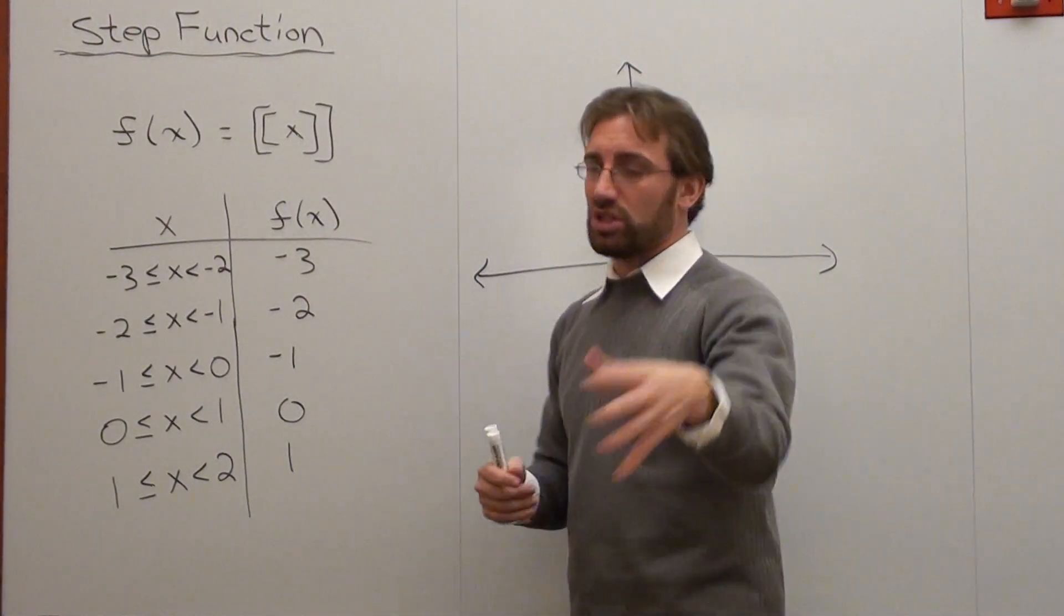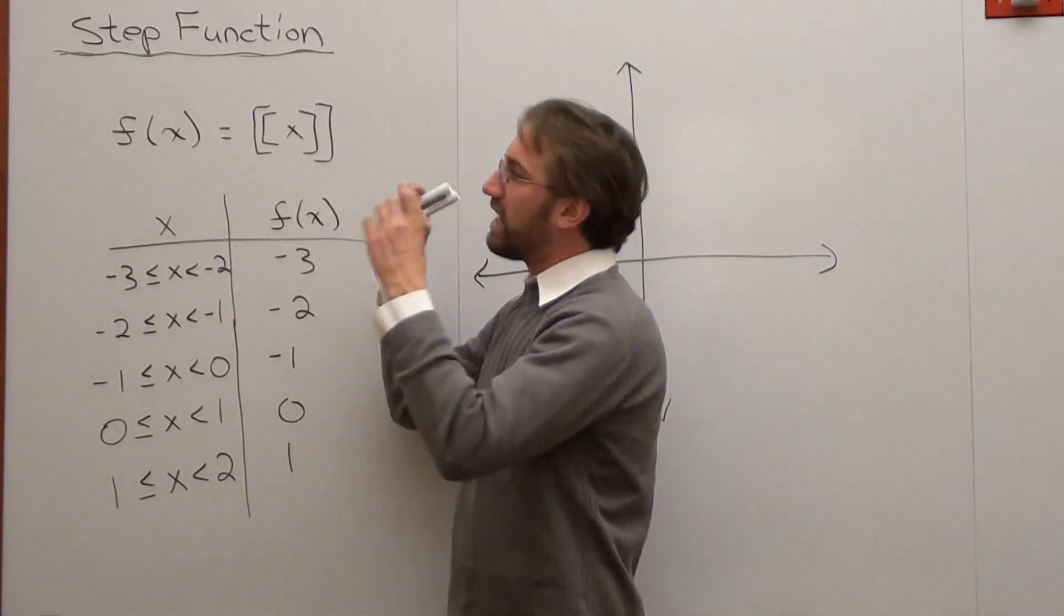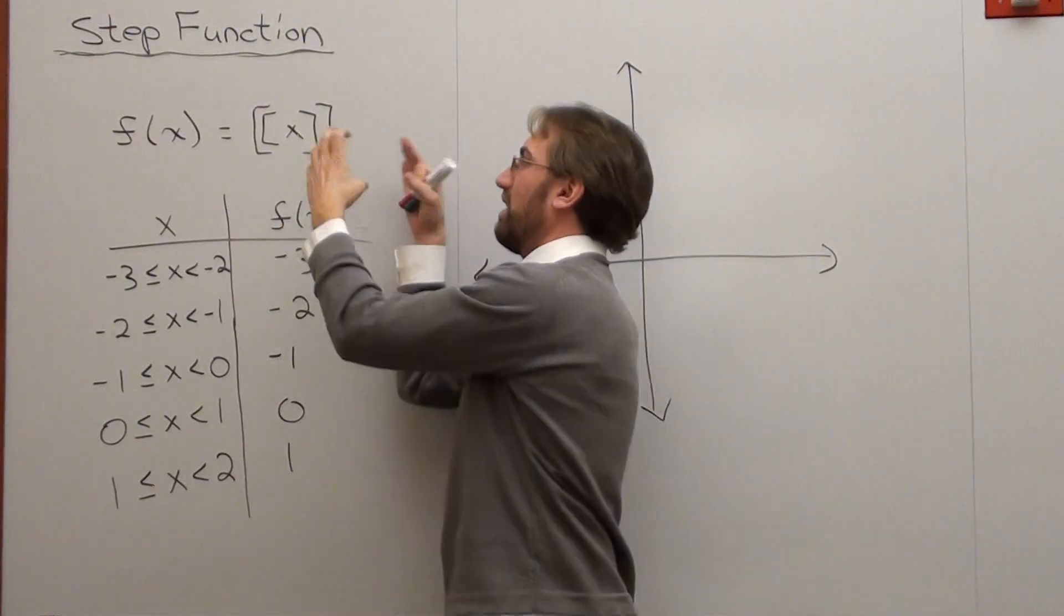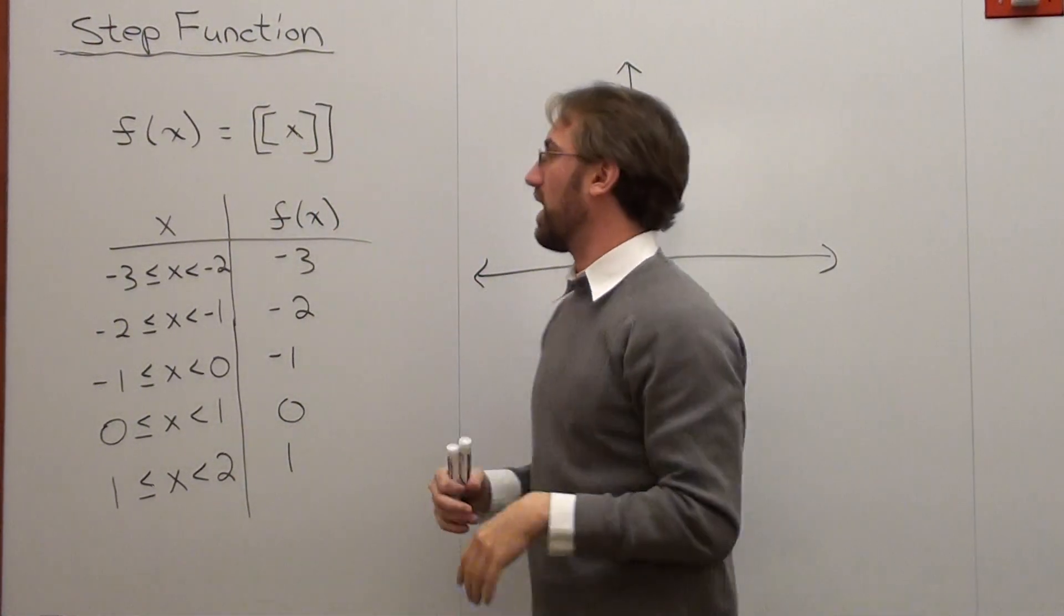Something called step functions, which is noted as f of x equals, and then you got like two brackets in front of an x, and then you can put like 2x and 2x minus 1, but everything is in these special little brackets.